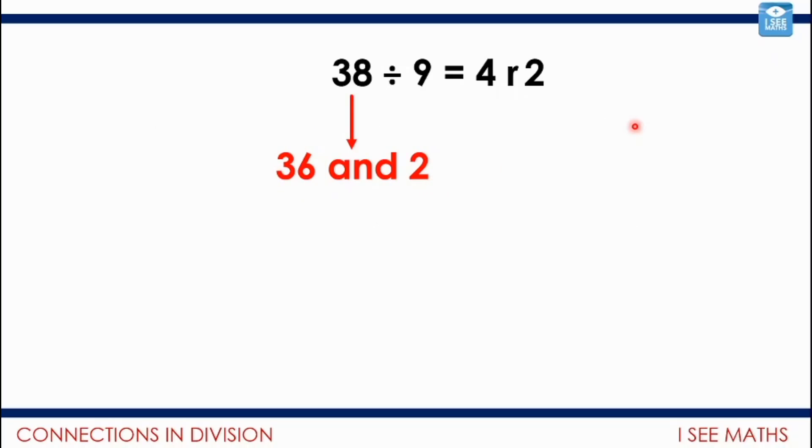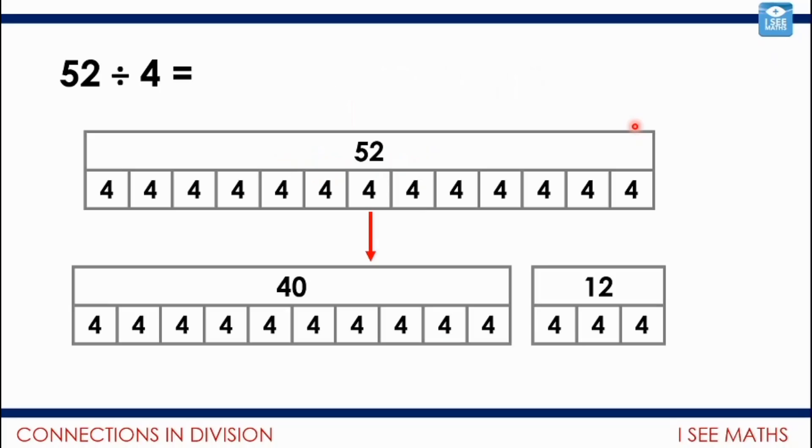And actually, when we're doing written methods for division, maybe without knowing it, this is actually kind of what we're doing. Now, this is an example we looked at yesterday. 52 divided by 4. Now, you might not know this number fact. Because there'll be a limit to the times tables that you've memorized. So you might not know how many 4s in 52. So then we just need to think, how can I break down my 52 into amounts where I know how many 4s will be in each of those pieces? So the example we gave yesterday is partitioning the 52 into 40 and 12. So we know that the answer then will be 13.